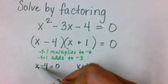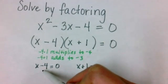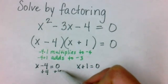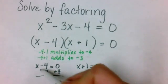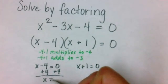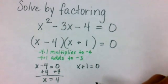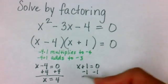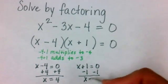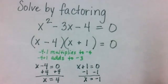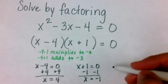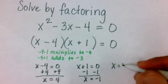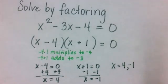Now we solve these equations. For x minus 4, we do the opposite of the minus 4 by adding 4 to both sides. That leaves me with x equals 4. For x plus 1, we do the opposite of plus 1, which is to subtract 1 from both sides, and that leaves me with x equals negative 1. So my solutions are x equals 4 and negative 1.